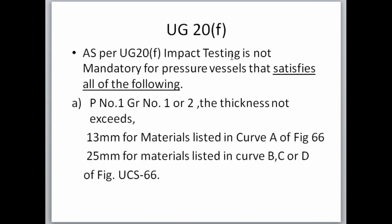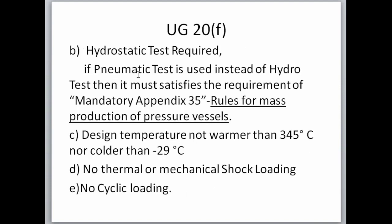As per UG20F, impact testing is not mandatory for pressure vessels that satisfy all of the following requirements. The first requirement is that for P1 group 1 or 2 materials, the thickness shall not exceed 13 mm for materials listed in Curve A of Figure UCS66, and 25 mm for materials listed in Curve B, C, or D of Figure UCS66. We will go through Figure UCS66 later in this lesson.